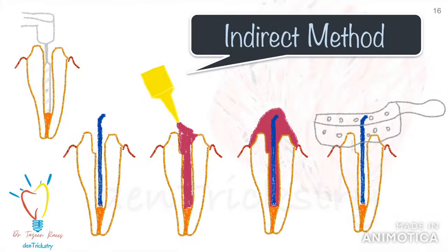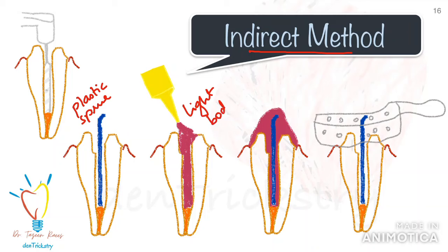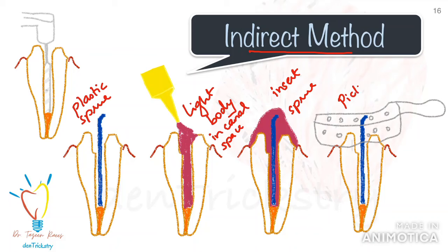For the indirect method: similarly, prepare the coronal ferrule and post space, lubricate it, and insert the plastic sprue or orthodontic wire — checking it fits loosely. Remove the sprue and apply polyvinyl siloxane tray adhesive on it. Fill the canal space completely with polyvinyl siloxane light body impression material, then insert the sprue or orthodontic wire and take a pickup impression. Check for voids and inaccuracies. The impression is then sent to the lab, where the lab technician fabricates a post pattern on the stone model, which is converted to the final post.